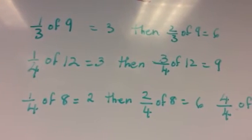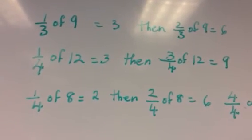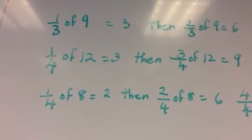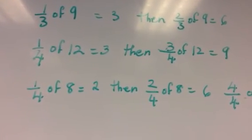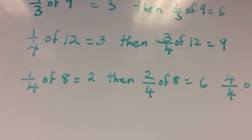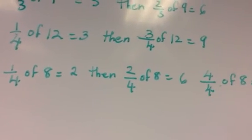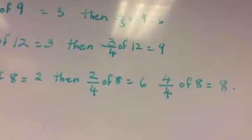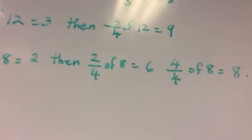1 fourth of 8 is 2. So what is 2 fourth of 8? It would be 1 fourth of 8 is 2, then 2 fourth of 8 is 4. And then 4 over 4 of 8 is 8.